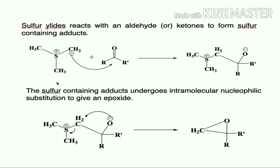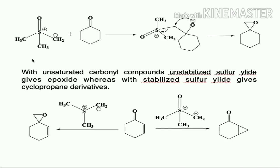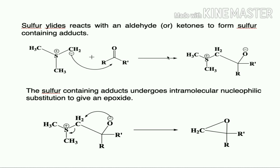This is the importance of the sulfur ylide — this is an unstabilized sulfur ylide. In contrast, the stabilized sulfur ylide (the sulfoxonium ylide) is stabilized by resonance from the oxo group on the sulfur. The stabilized sulfoxonium ylide reacts with cyclohexanone to form a sulfur-containing adduct that undergoes intramolecular substitution to give the corresponding epoxide derivative.